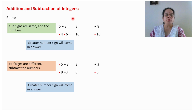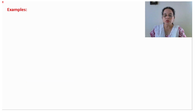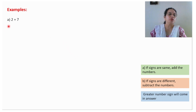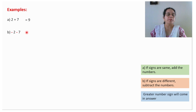Once again I am reciting for you: if signs are same, add the number; signs are different, subtract the number; greater number sign will come in the answer. So let us see how we use this. Signs are same, add the number — 9 — greater number sign will come in the answer, so the answer is plus 9. Signs are same, add the number — 7 plus 2 will be 9 — greater number sign will come in the answer, so the answer will be minus 9.